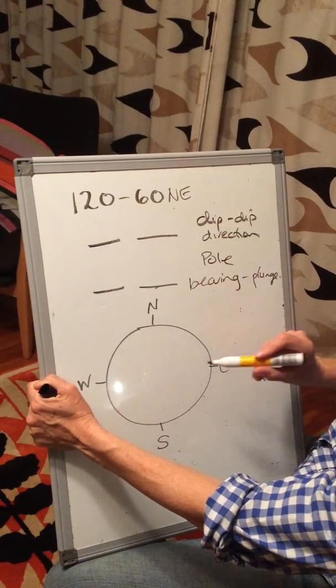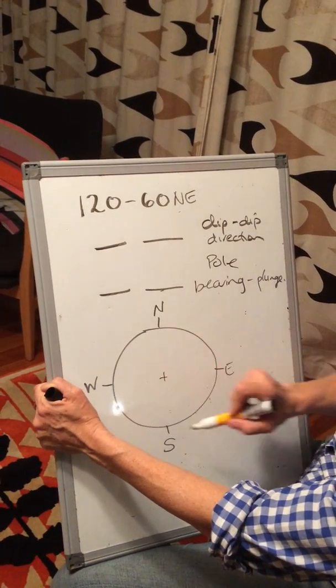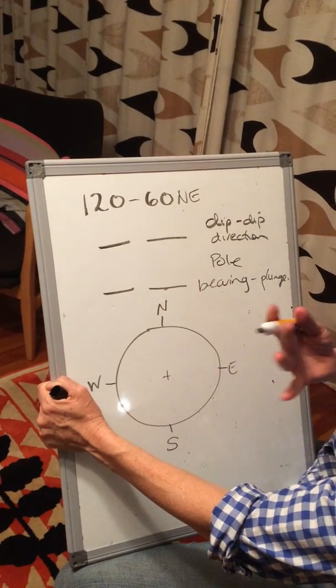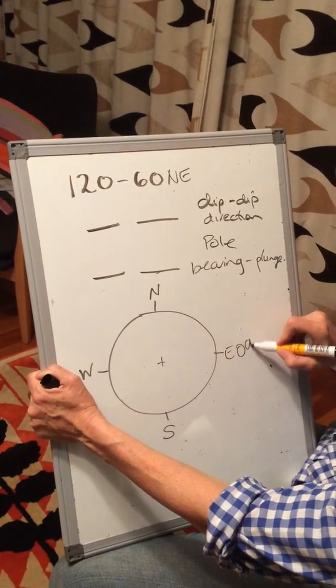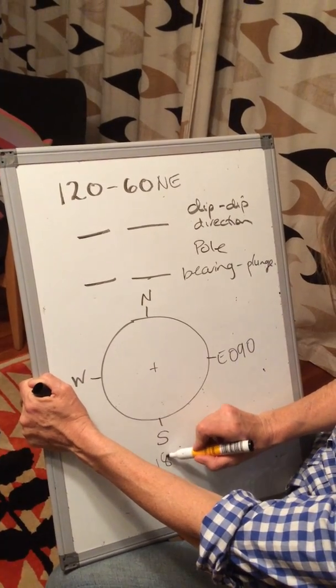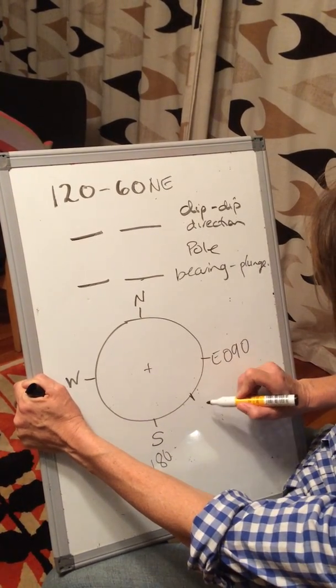So the first thing to do is draw a line on something like this, a compass dial. It's like a map view, so I find 120, that's east, that's 090, south is 180, so 120 is about there.